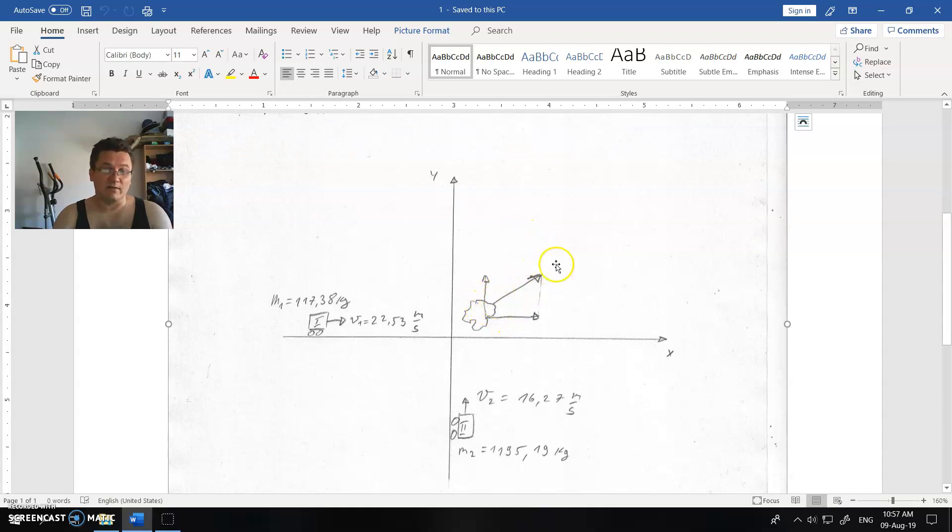In inelastic collision, and in elastic collision, in every kind of collision, momentum is always conserved. That means the x-component of the momentum is conserved and the y-component of momentum is conserved.